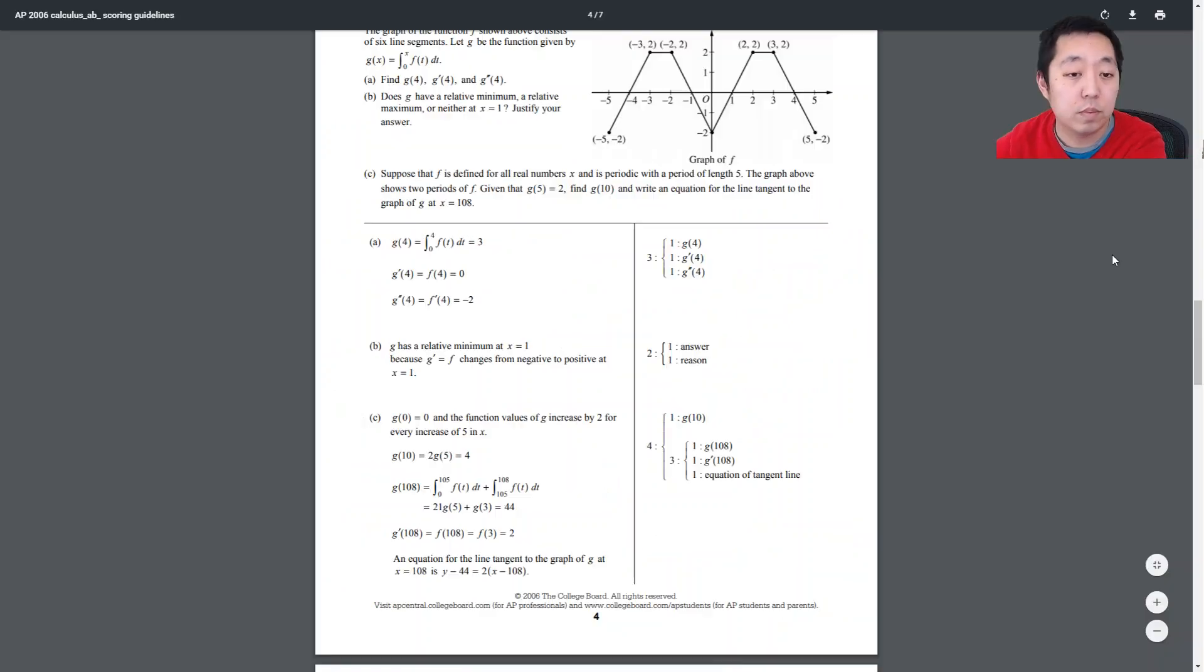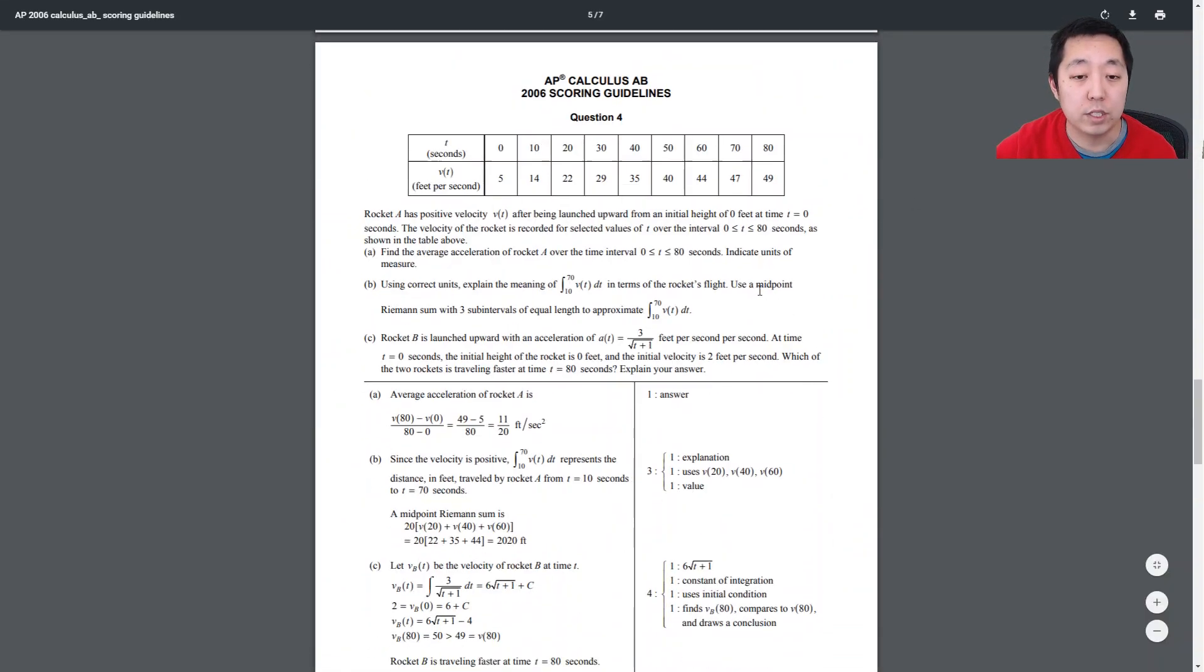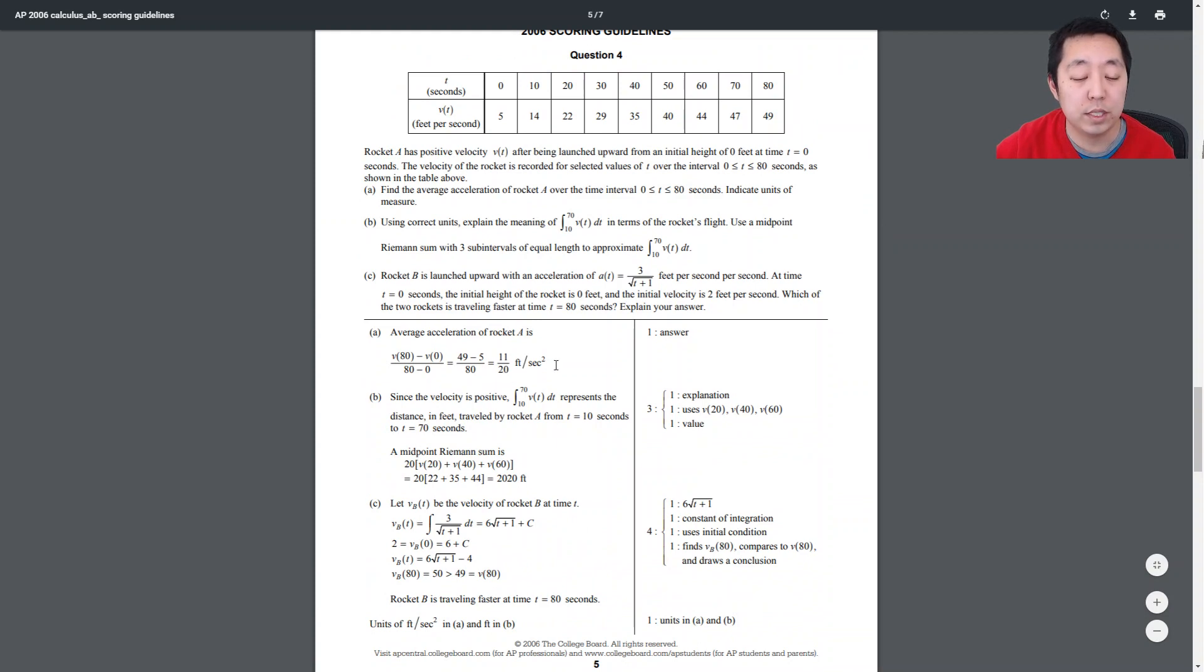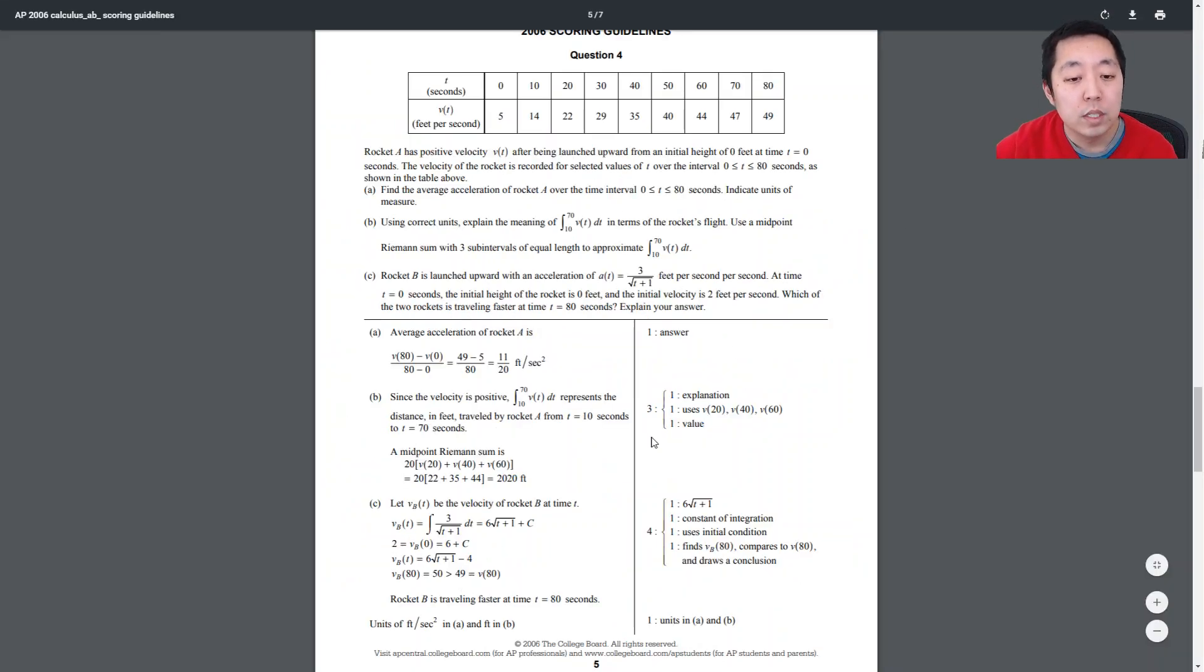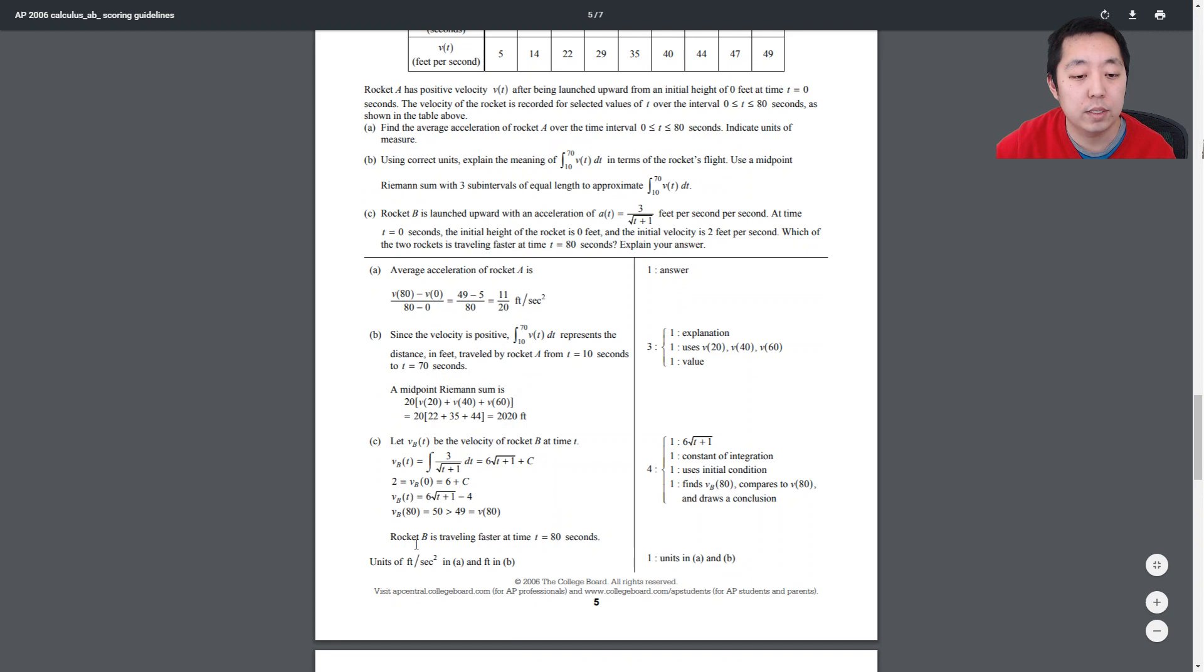So let's take a look at question 4. 11 over 20 feet per second squared. Did I write that right? Because it is acceleration. Oh, I messed up. Should be squared. Hope I don't get it totally wrong for that. And v of B of 80 is 50, which is greater than 49. So rocket B is going faster.